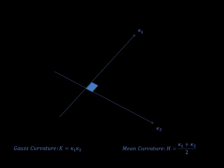These are called kappa1 and kappa2. Using these we can find the Gauss curvature and the mean curvature. The Gauss curvature is given by kappa1 times kappa2 and the mean curvature is kappa1 plus kappa2 divided by 2.